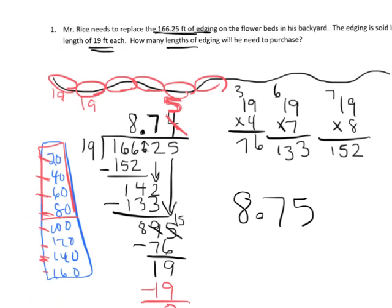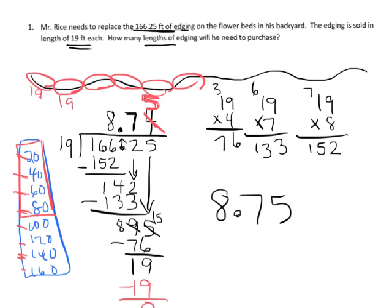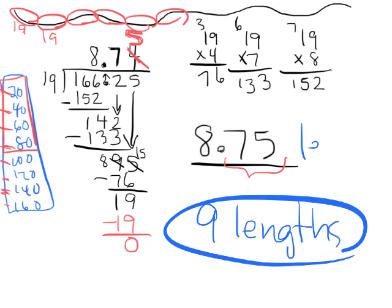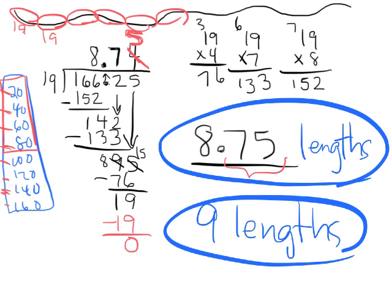The question asks how many lengths of edging he needs to purchase. The exact number is 8.75, but the store probably won't let him purchase a portion of a length, so he may have to buy 9 lengths. If some students want to say 8.75 lengths because they found a store that sells partial lengths, that's fine too.